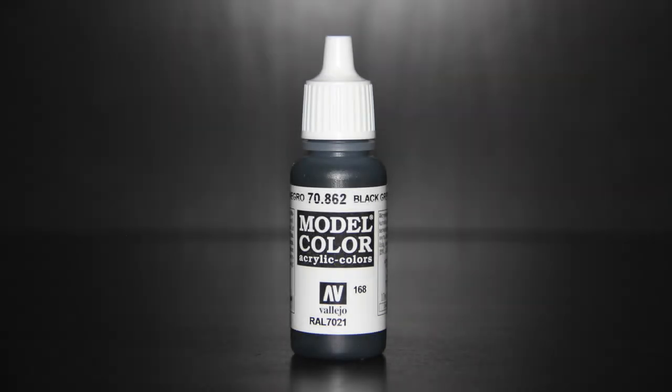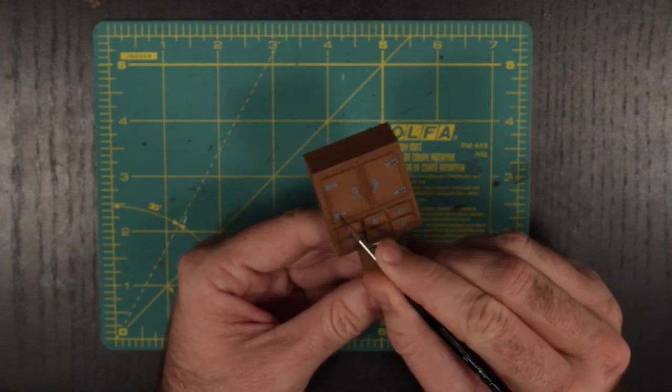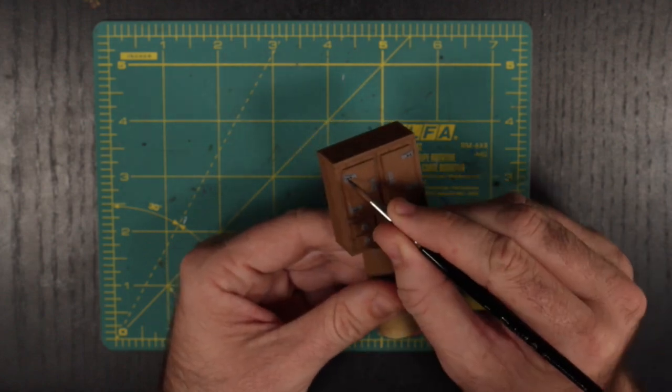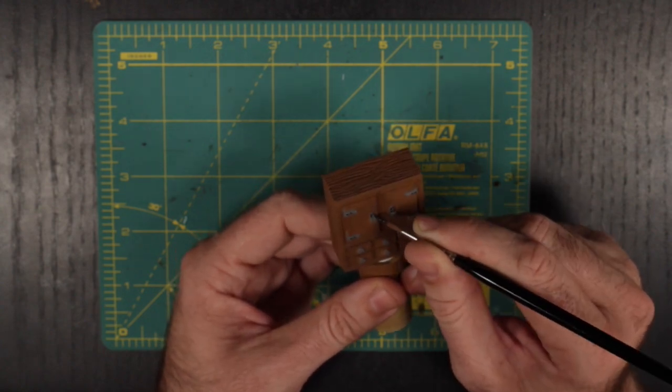Next up is Vallejo's Black Grey. This we will be using to darken the rivets on the hinges, as well as the locks and keyholes on the cabinets. This little addition will bring just enough detail out for our scenery to look as though it was built in a living, breathing world.